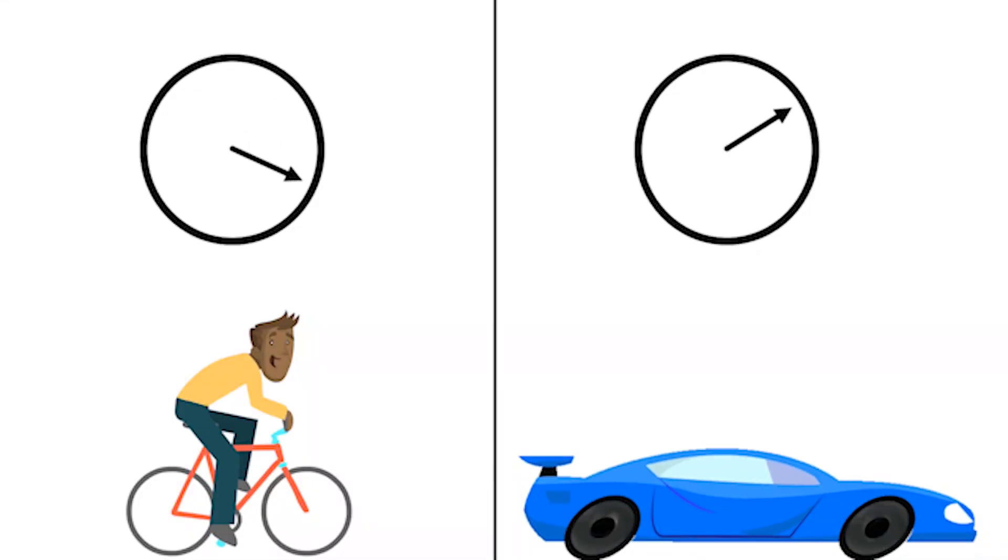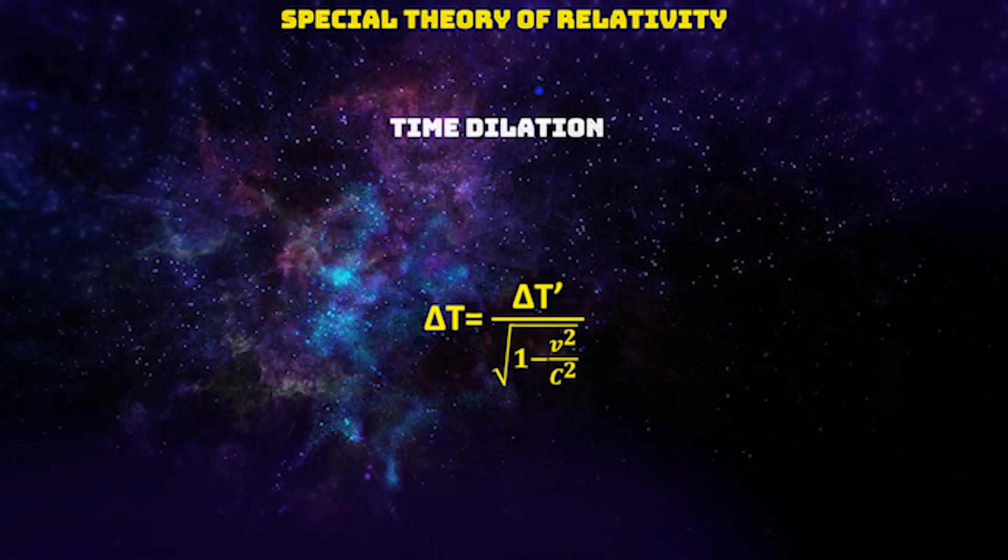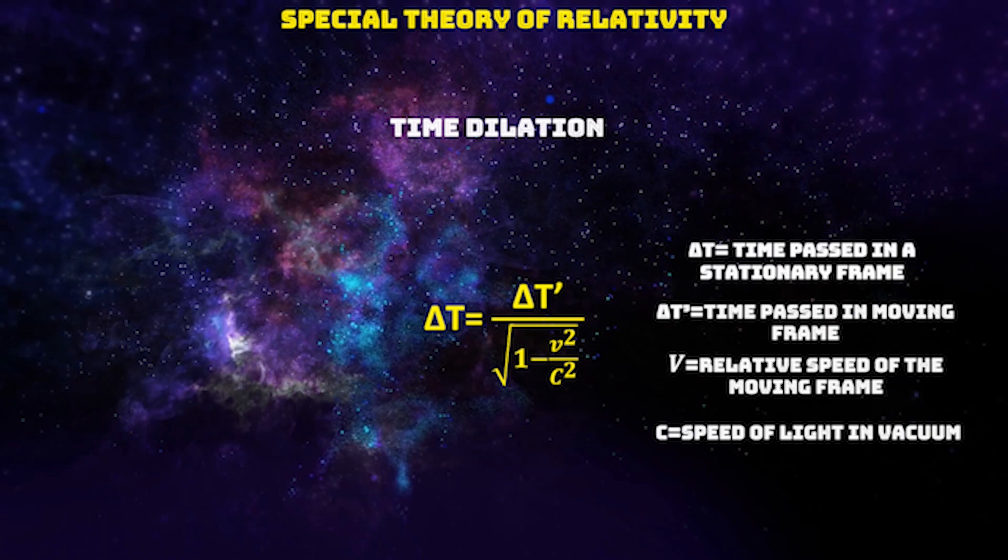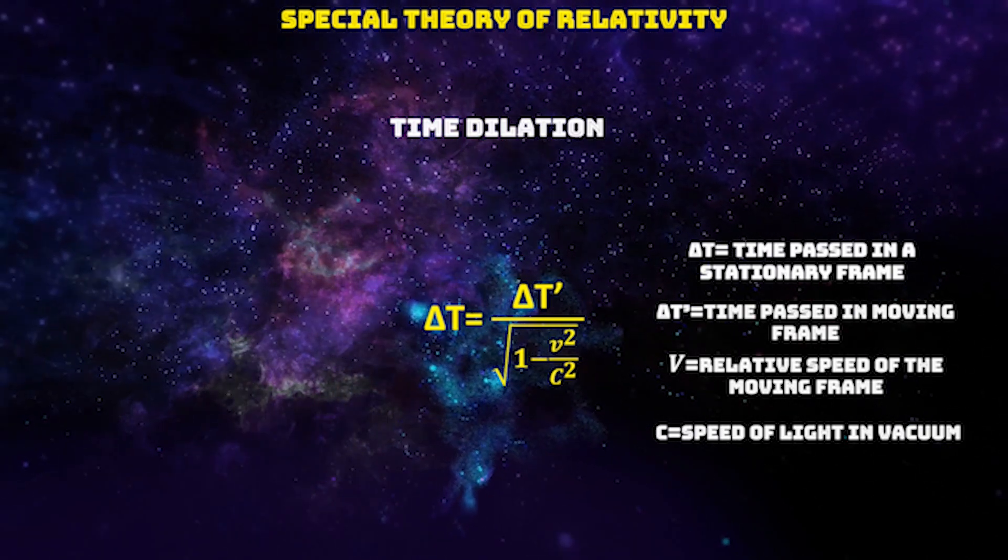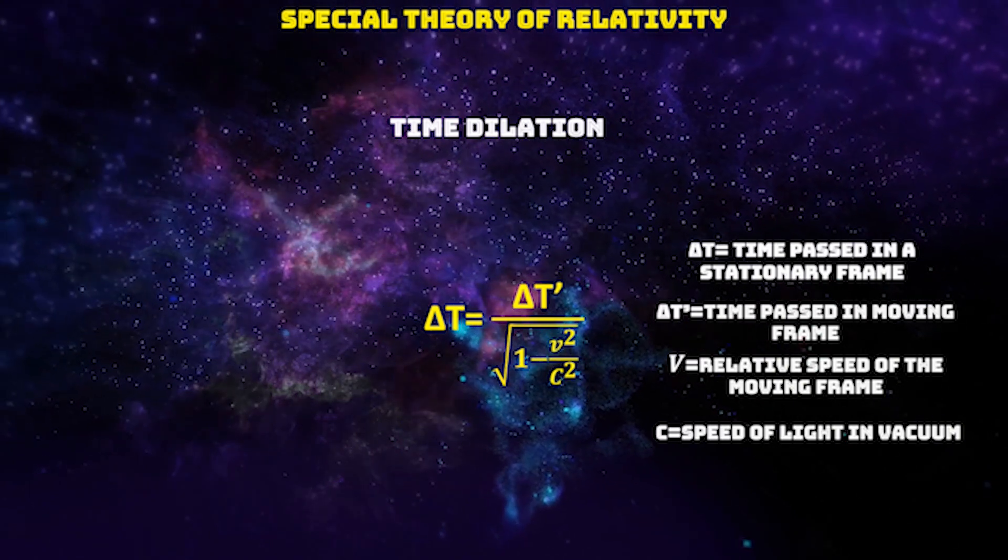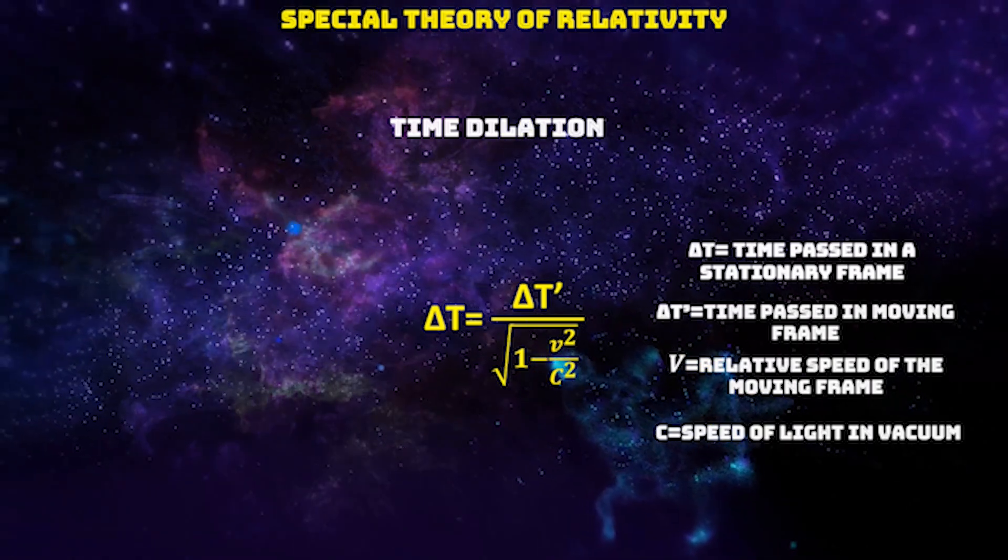It says time moves slower for an object which is moving with higher speed. This equation tells us about the time dilation, where delta t is the time passed on a stationary frame and delta t prime is the time passed on a frame moving with velocity v. According to this equation, time passes slow in fast moving frames.